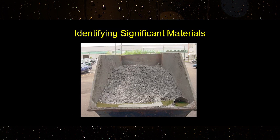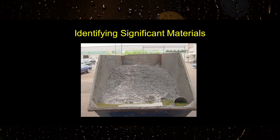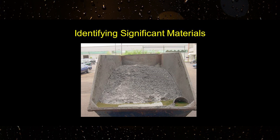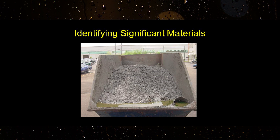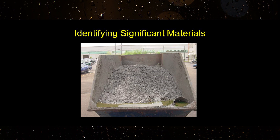The stormwater permit requires that the stormwater pollution prevention plan include a list of all significant materials that have the potential to contaminate stormwater runoff. A significant material is any material that can degrade or impair water quality.